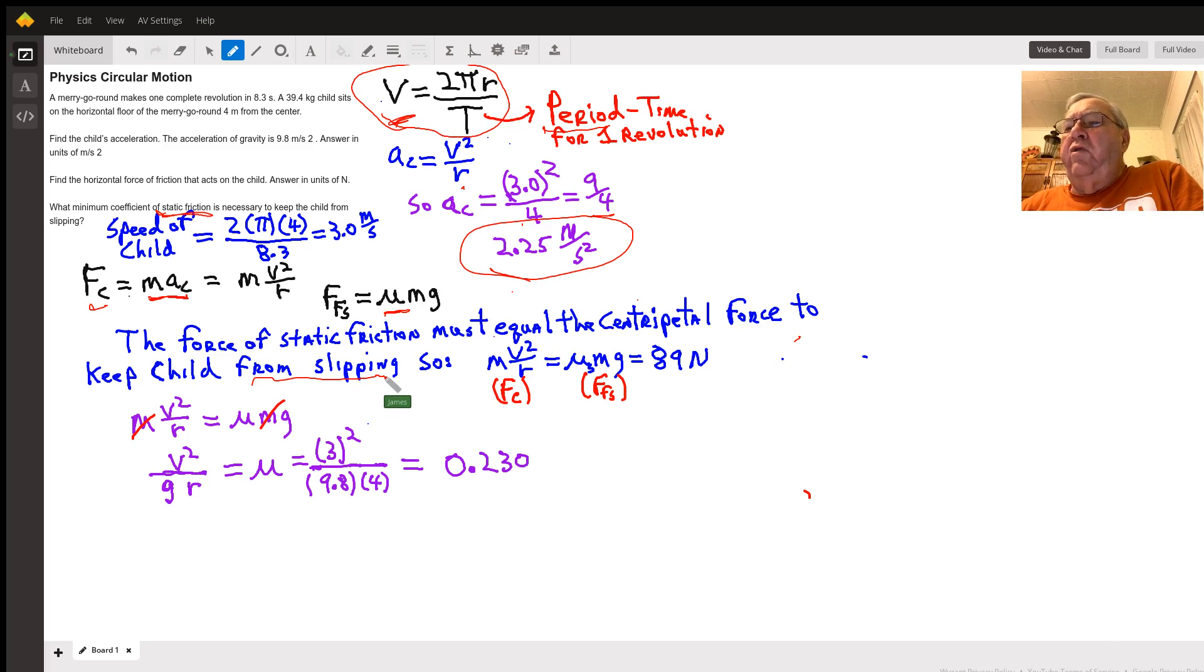So you know that the centripetal force, mv² over r, is equal to the frictional force, μmg. So that frictional force must be equal to the centripetal force, which would be 89 newtons.